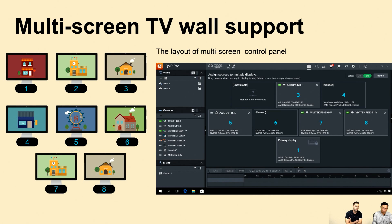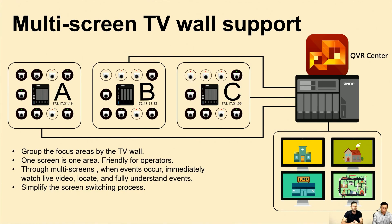The benefits of multi-screen TV wall: you can use the TV wall to classify field areas by purpose — for example, screen one shows the e-map and screen two shows the building gate. One screen, one purpose — it is intuitive classification. Operators without complicated training can quickly grasp the overall situation and reduce the possibility of misjudgment. When an event occurs, you get an instant view and location for quick response, and multi-screen helps simplify the screen-switching process.